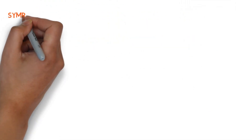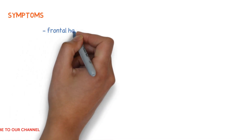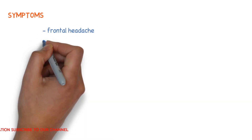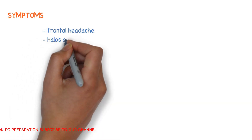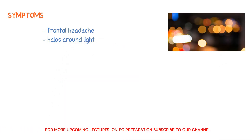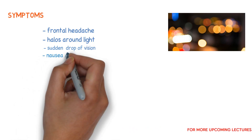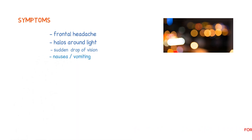Let's talk about the symptoms. Due to high intraocular pressure, there may be frontal headache. There may be halos around light due to corneal edema. There may be a sudden drop of vision, and there is the possibility of nausea and vomiting.